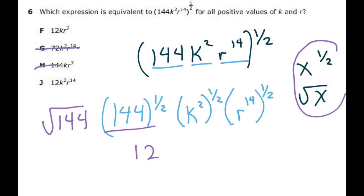So those two go away. Now you can use your power property for exponents and multiply those two numbers. So 2 times 1/2 is just 1, so that's going to be k to the first power and they're not going to put the 1, they just put k. And then you multiply those two. 1/2 of 14 is 7.